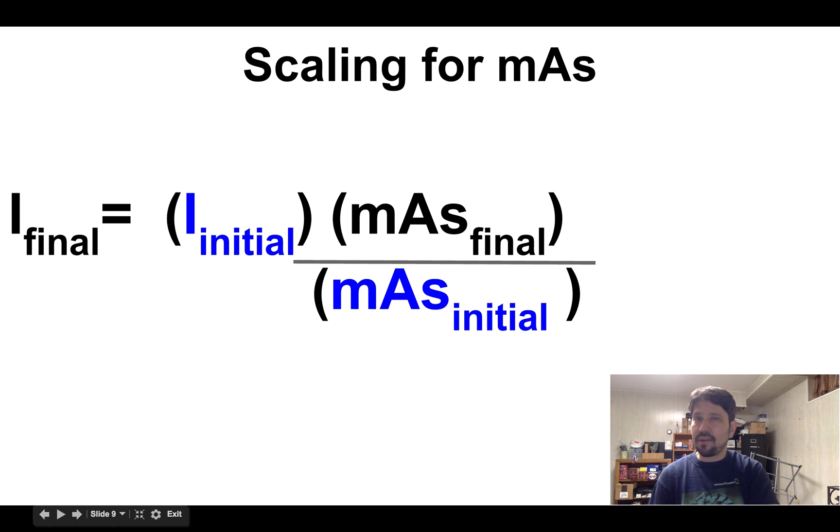So I like this formula a lot better for mAs, and that's how I sort of got there. So I can take my initial intensity and I multiply it by the ratio of the final mAs over the initial mAs.